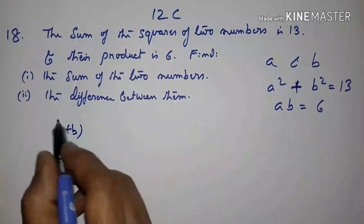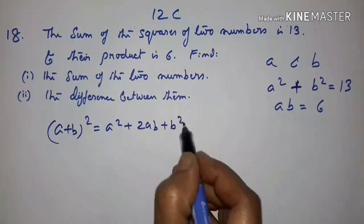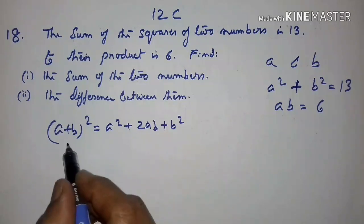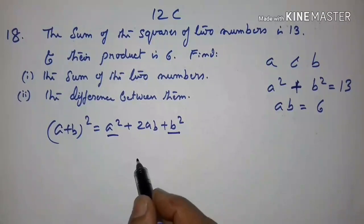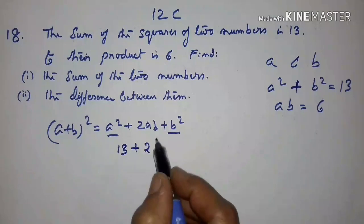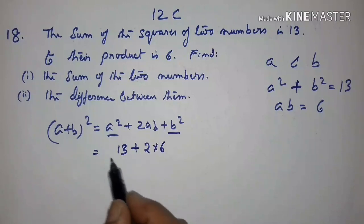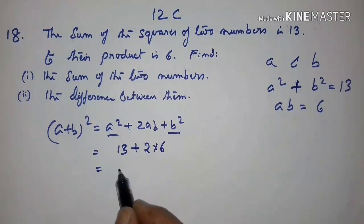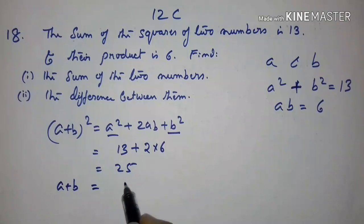Using the formula: A plus B, the whole square, equals A squared plus 2AB plus B squared. Substituting, A squared plus B squared is 13, and 2 into AB is 2 into 6 equals 12. So A plus B squared equals 13 plus 12 equals 25. Taking the square root, A plus B equals plus or minus 5.